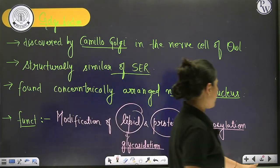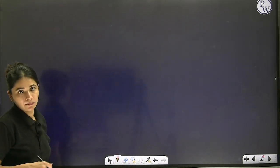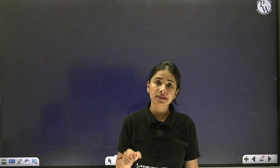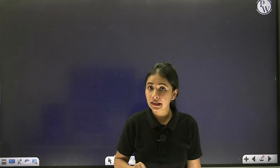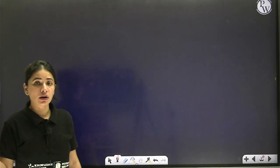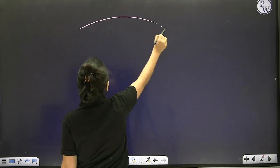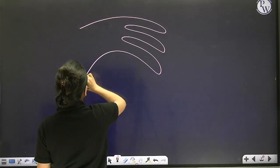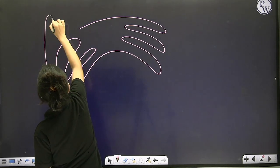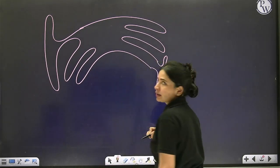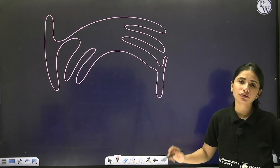Golgi bodies are concentrically arranged near the nucleus and structurally similar to SER. They have three defined structures: flattened sac-like interconnected units called cisternae, which give rise to tubules, followed by vesicles. From the cisternae arise the tube-like structures — this is how the Golgi body is similar to SER.